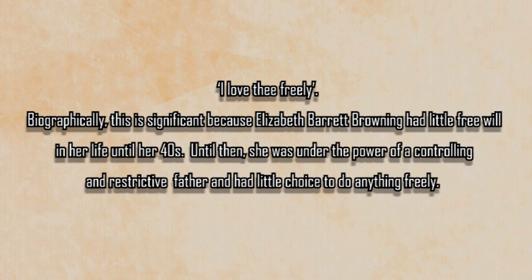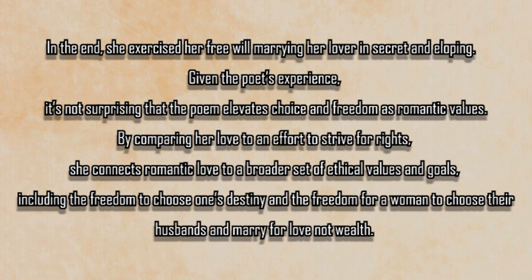Throughout the poem, the speaker describes her love as a free choice, based upon her admiration for her lover: I love thee freely. Biographically, this is significant, because Elizabeth Barrett Browning had little free will in her life until her forties. Until then, she was under the power of a controlling and restrictive father, and had little choice to do anything freely. Her reference to old griefs in line 10 is likely an allusion to the miserable time spent under her father's control. However, there is a happy ending — she exercised her free will, marrying her lover in secret and eloping.